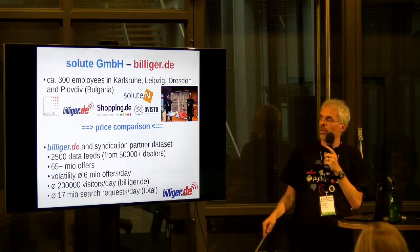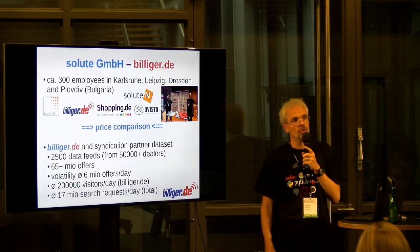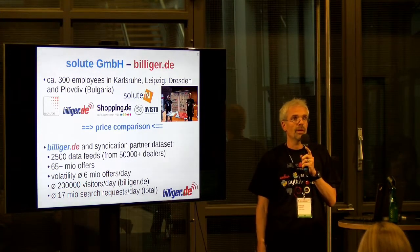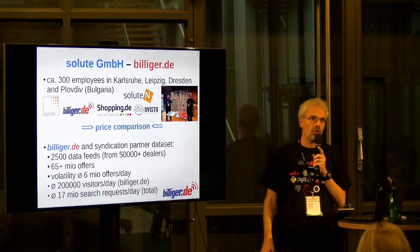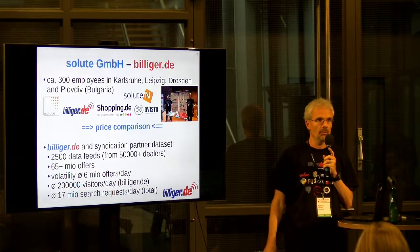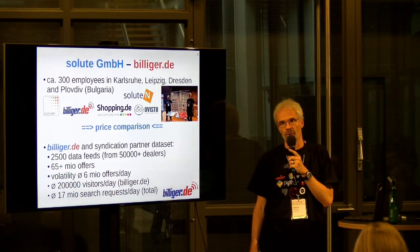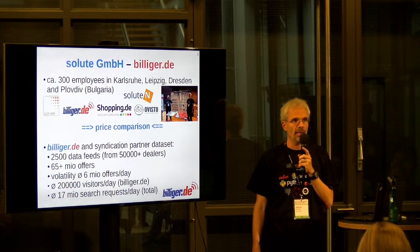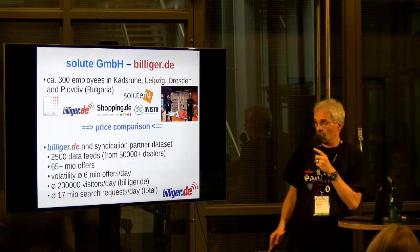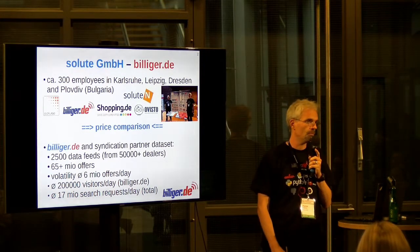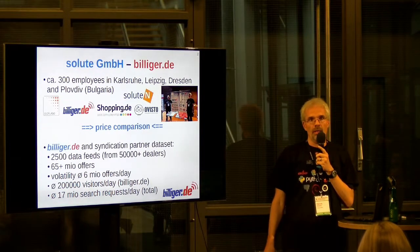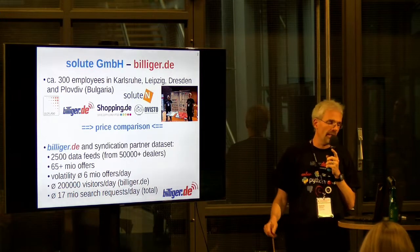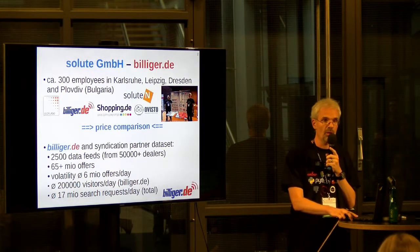The dataset I'm talking about is the German dataset: two and a half thousand data feeds from about 50,000 online shops delivering 65 million offers. These offers change quite often — about 10% every day. There will be new offers, old offers deleted, price updates, description updates, availability updates, items going out of stock. So there are at least six million changes a day. The main website is visited by about 200,000 people every day, and combined with the syndication API, that's 17 million search requests on a typical day.